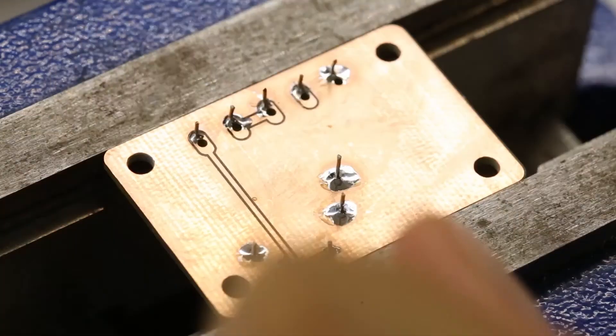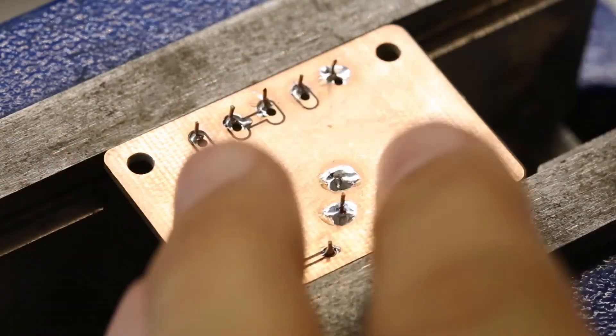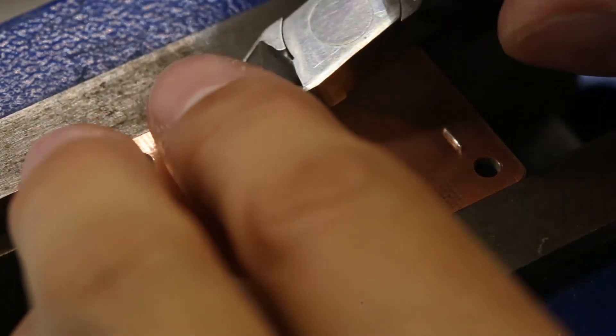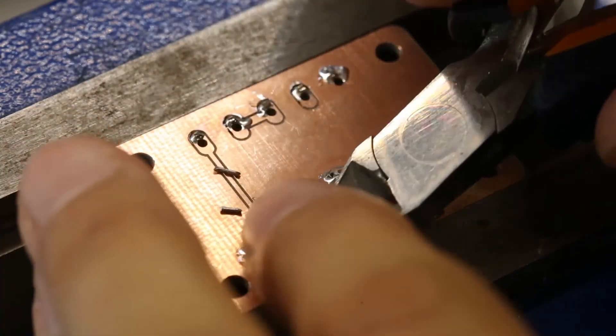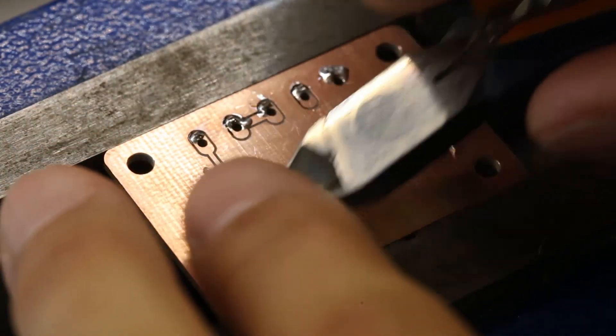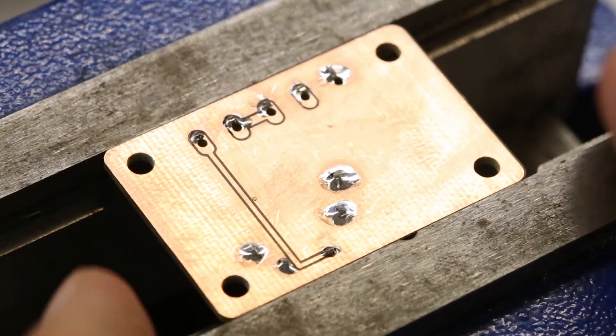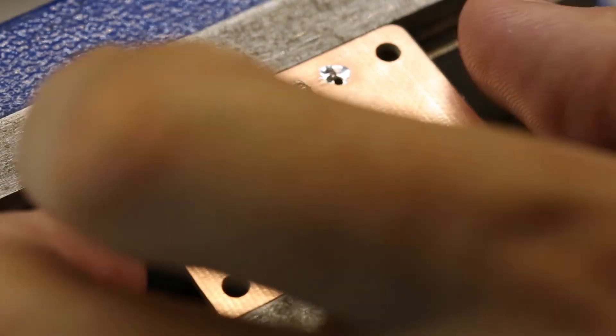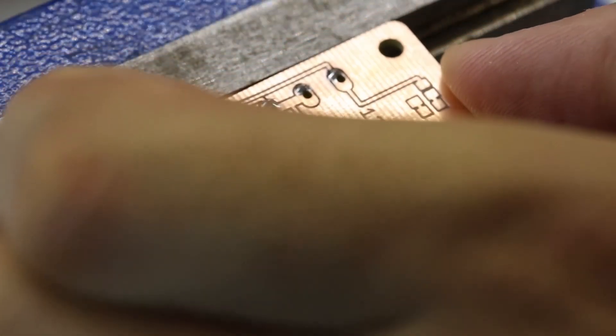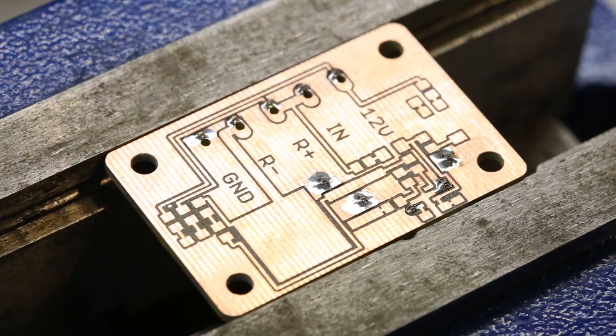Flip the board around, do the same here. Usually I wouldn't do this in a vise, it's just a way to keep the board focused while I'm doing this. Usually I just handhold it. Okay, this is the board with all the wires done.